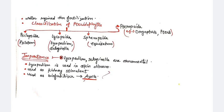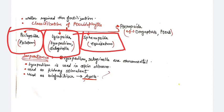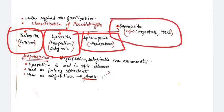Classification of pteridophytes includes four classes: Psilopsida — example Psilotum; Lycopsida — examples Lycopodium and Selaginella; Sphenopsida — example Equisetum; and Pteropsida — examples Dryopteris and Pteris.